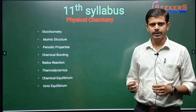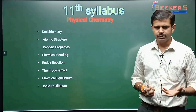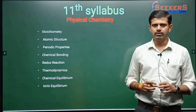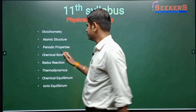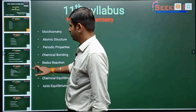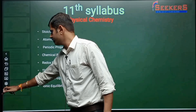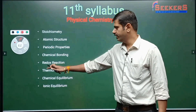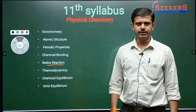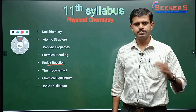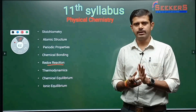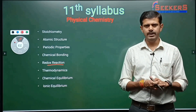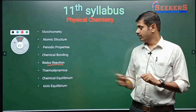Then we'll be going with chemical bonding. Many theories will come — VSEPR theory — how atoms attract and repel each other. After that, redox reactions will tell about oxidation numbers and how electrons are transferred from one atom to another — how oxidation and reduction take place.